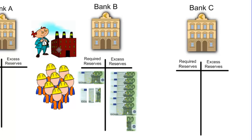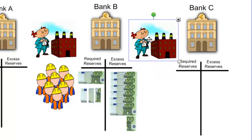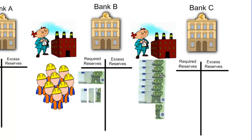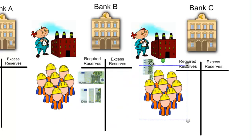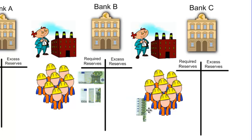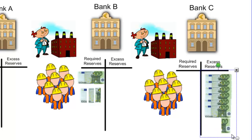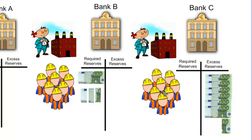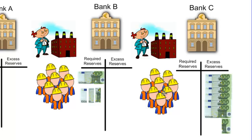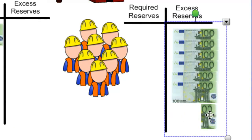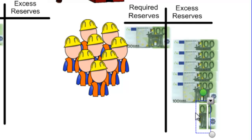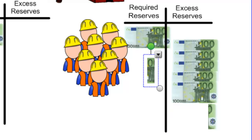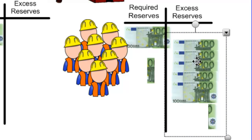The availability of excess reserves in Bank B attracts new borrowers. Another borrower joins the market, borrows the 640 euros, and uses this money to pay for the production of goods and services and the employment of yet more workers. Those workers get paid the borrowed money, and ultimately the 640 euros will be deposited into yet more banks in the banking system. With a required reserve of 0.2, 128 euros must be added to Bank C's required reserves, leaving Bank C with 512 euros in its excess reserves.